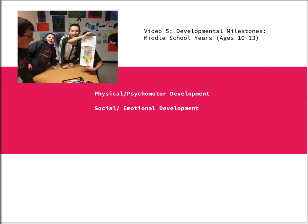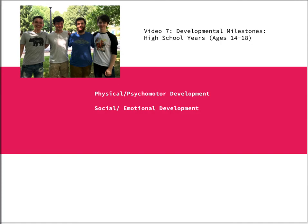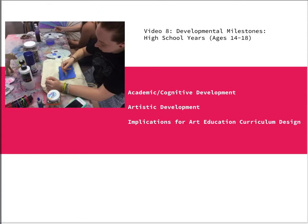Video five will focus on the middle school years, ages 10 to 13, starting with physical and social development. Video six will focus on academic and artistic development and how it impacts art education curriculum design. And then finally we'll end with looking at developmental milestones for high school kids, including their artistic development.